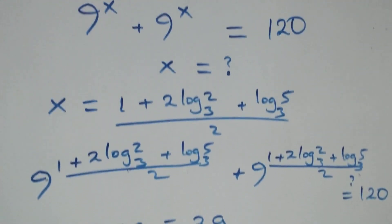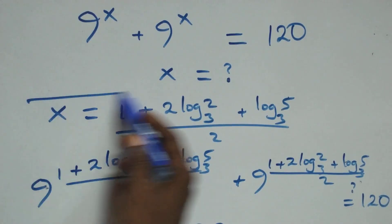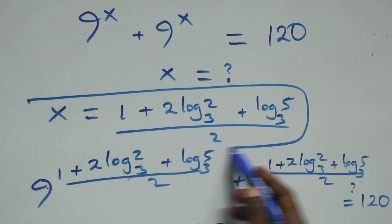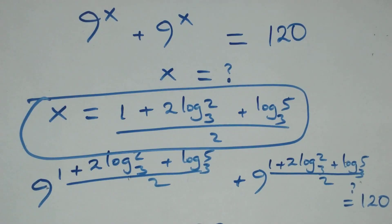Therefore we conclude that x equals (1 plus 2 log₃2 plus log₃5) all over 2 satisfies the given problem. Thank you for watching — don't forget to subscribe for more videos, turn the notification bell on, share this video, and leave a comment. See you next class, bye for now.